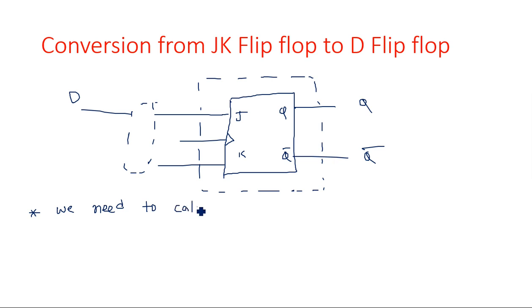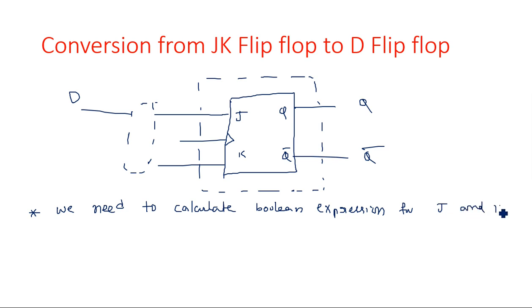We need to calculate the Boolean expressions for J and K in terms of D and QN — the present input. How to identify the JK flip-flop Boolean expressions in terms of D and present state QN will be done by taking a conversion table.